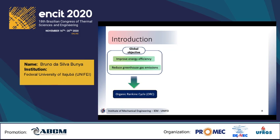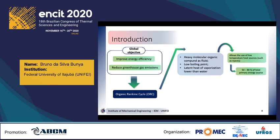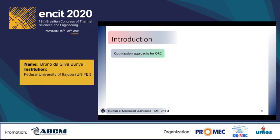The ORC is similar to the conventional Rankine cycle. However, it makes use of a heavy molecular organic compound as a working fluid — not water as in the conventional Rankine cycle. It also presents a low boiling point and a latent heat of vaporization which is lower than water. Such characteristics allow operation at lower temperatures, providing a better use of the heat source. These heat sources can represent a range of 50% to 80% of total primary energy sources.